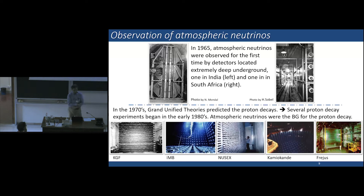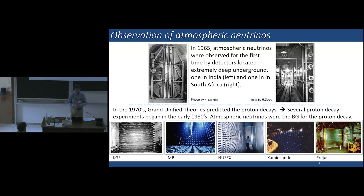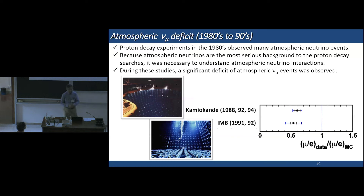About 50 years ago, grand unified theories appeared, and these theories predicted that the proton should decay. Therefore, several proton decay experiments began in the early 80s to confirm the idea of grand unified theories. For these experiments, atmospheric neutrinos were the background for the proton decay searches. Because atmospheric neutrinos were the most serious background to the proton decay searches, it was necessary to understand atmospheric neutrino interactions. During these studies, a significant deficit of atmospheric muon-neutrino events was observed in Kamiokande and later in IMB experiments.